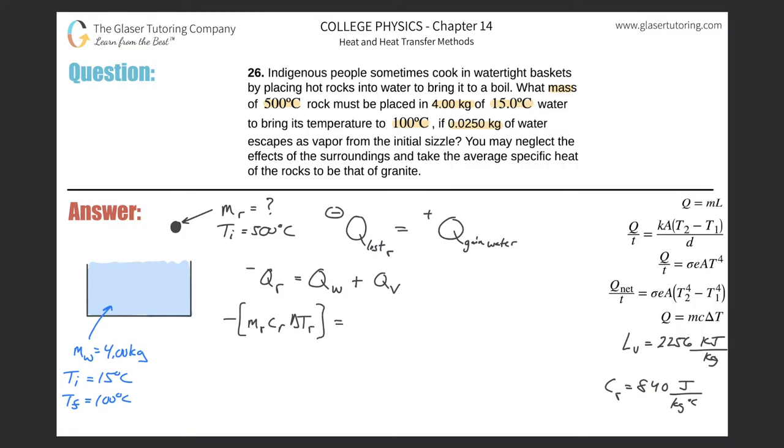That will equal then the Q of the water. So that is the mass of the water multiplied by the specific heat of the water multiplied then by the change in temperature of the water plus then the, I'm going to be using this formula at the top. This is then the heat of vaporization, basically. So this is then the mass that vaporized multiplied by the latent heat of vaporization.